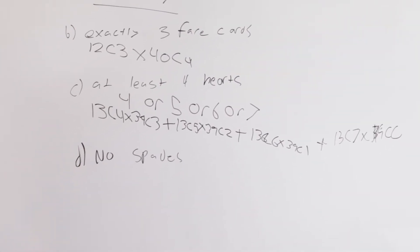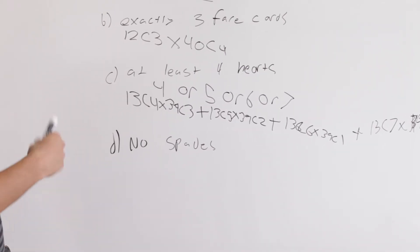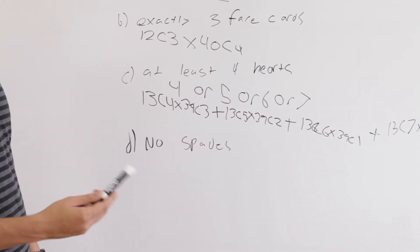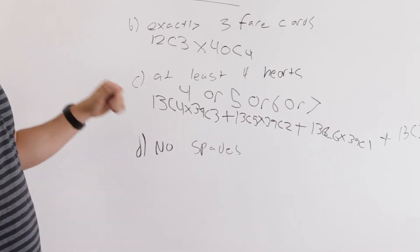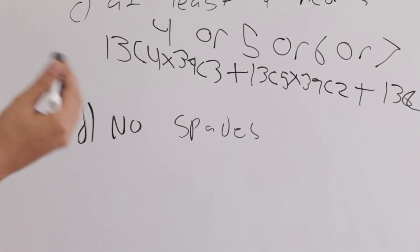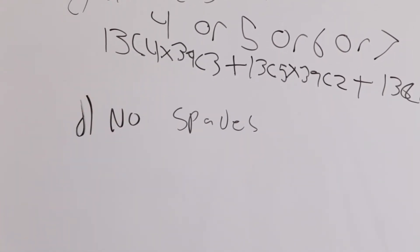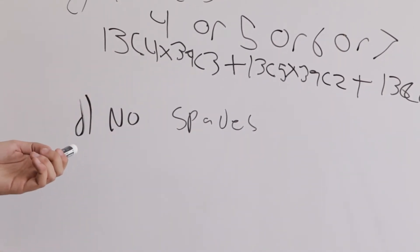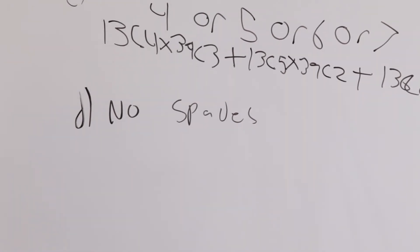Okay the final one will be no spades. So we're going to use the indirect method for this one like we did in one of the previous examples. So they're saying no spades. So let's take the total and subtract from it the opposite of what they're asking. So what are the total number of ways we could select seven cards? We've already calculated.